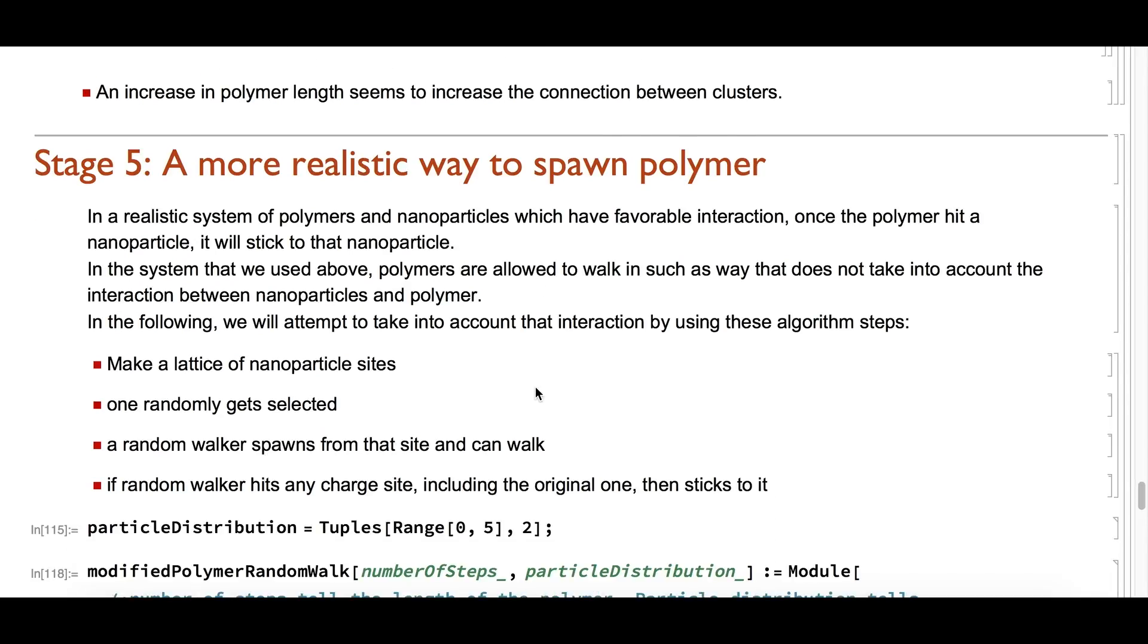In a realistic system of polymers and nanoparticles which have favorable interaction, once a polymer hits a nanoparticle, it will stick to that nanoparticle. In the system that we used above, polymers are allowed to walk in such a way that does not take into account the interaction between nanoparticles and polymers. In stage 5, we will attempt to take into account that interaction.